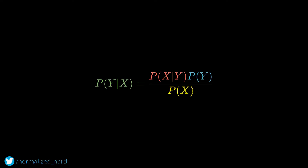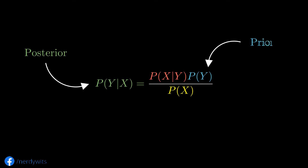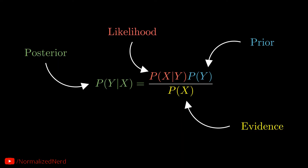Let me tell you how we name these terms. The left-hand side that we want to find is called the posterior. The right-hand side term — probability of y — is called the prior. Prior means the probability corresponding to an event before considering any evidence, and posterior means the probability of that event after considering some evidence. The evidence is nothing but the set of features. So the probability of x is called the evidence, and the term probability of x given y is named the likelihood.